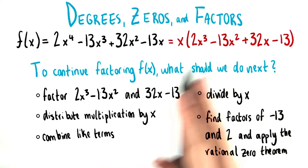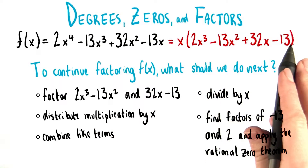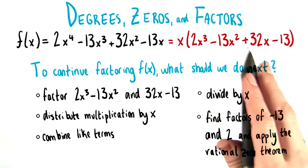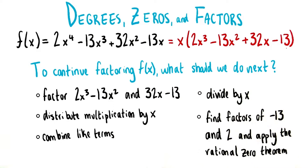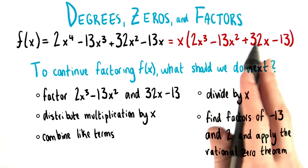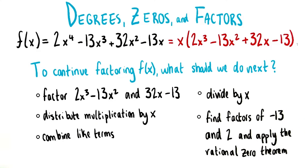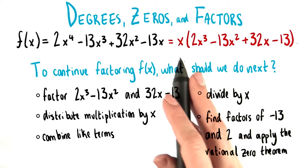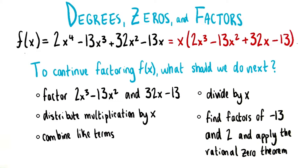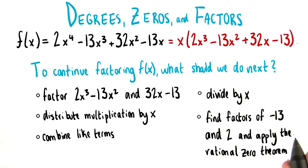Should we factor by grouping for the polynomial inside the parentheses — in other words, should we factor the first two terms and then the second two terms? Should we distribute multiplication by x to all the terms inside the parentheses? Should we combine like terms? Should we divide both sides of the equation by x? Or should we find factors of negative 13 and 2 and then apply the rational zero theorem?